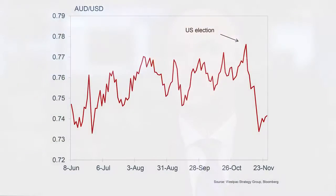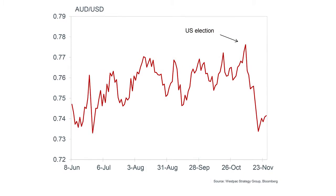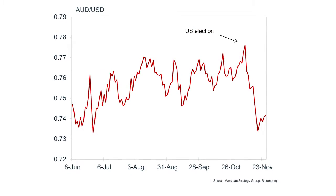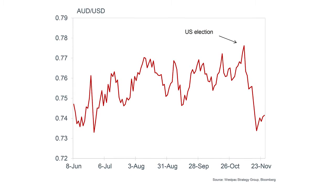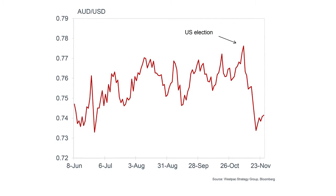The Australian dollar started the week under pressure, reaching a low of 73.11 — its weakest point since June. But it recovered in subsequent sessions to spend most of the week trading around the 74 cent mark.